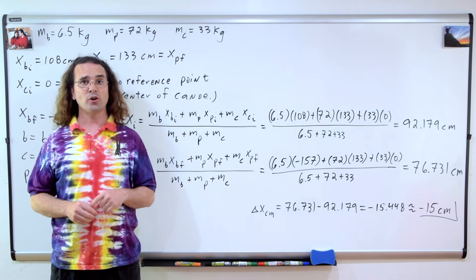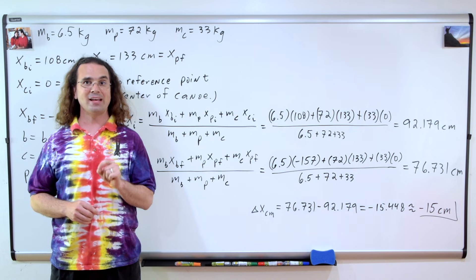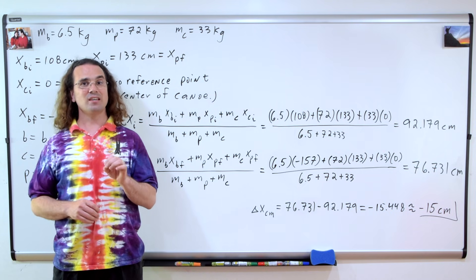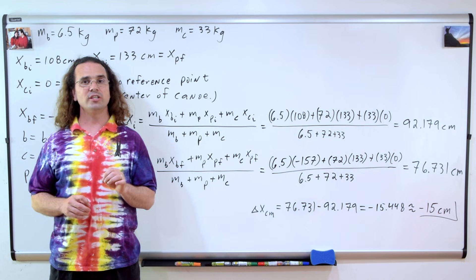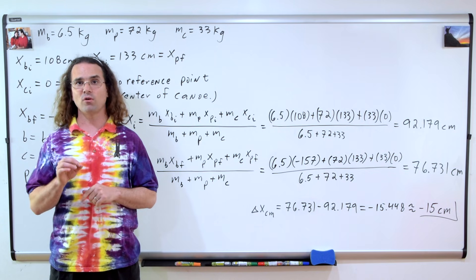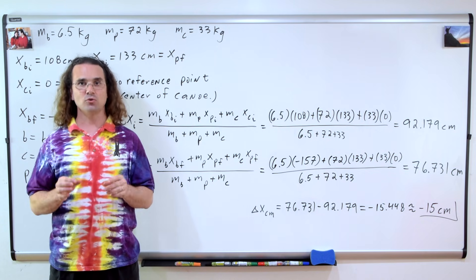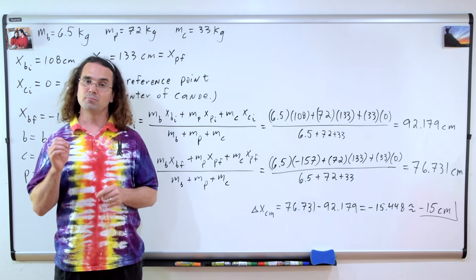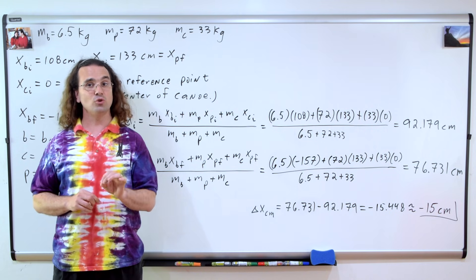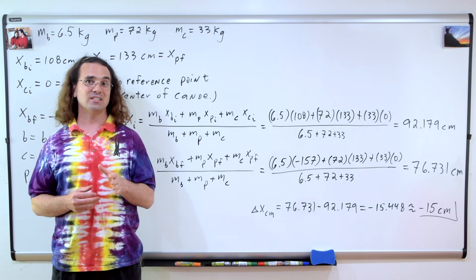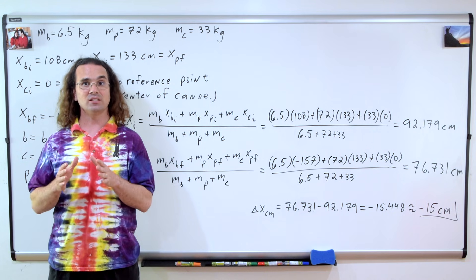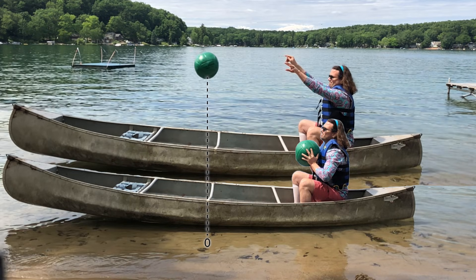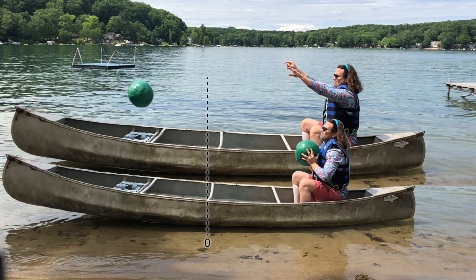Remember, our goal here is to determine the change in position of the center of mass of the system. Change in, or delta, is always final minus initial. So it is 76.731 minus 92.179, which equals negative 15.448, or negative 15 centimeters with two significant digits. In other words, the center of mass of the system moves 15 centimeters to the left relative to the system. In order for the center of mass of the system to stay in the same location relative to the rest of the planet, the zero reference point of the system — the center of the canoe — needs to move 15 centimeters to the right relative to the planet.